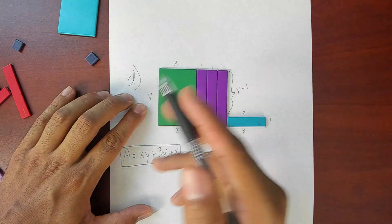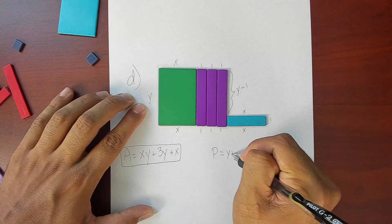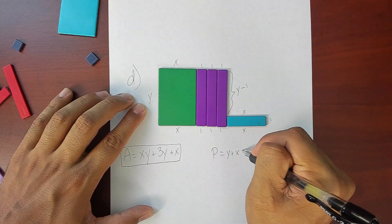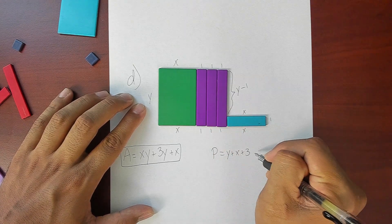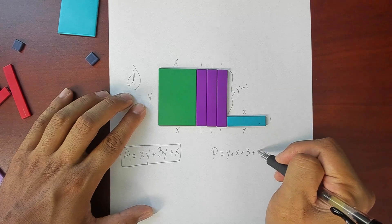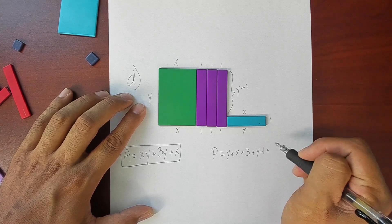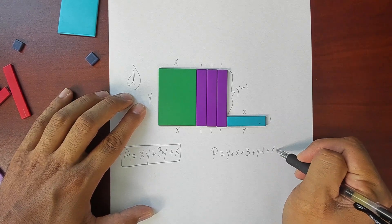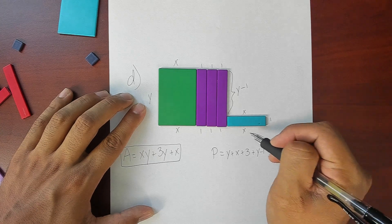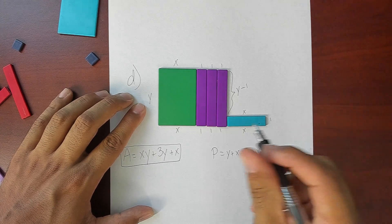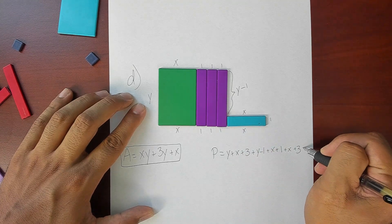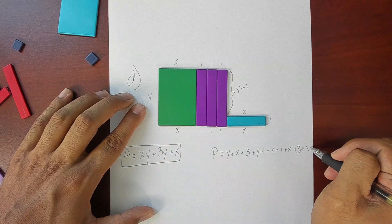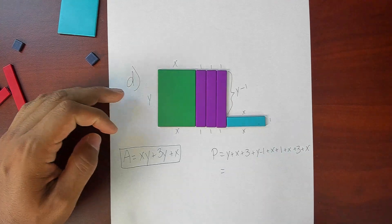We have y plus x plus, I'm going to cheat here, I'm just going to add those one, two, three, that's going to make three, plus a y minus one, plus an x, plus a one, plus an x, plus another, I'm going to cheat again because I know one plus one plus one makes three, finally plus our x tile here. That is a long expression that is not simplified but we can definitely simplify that out.